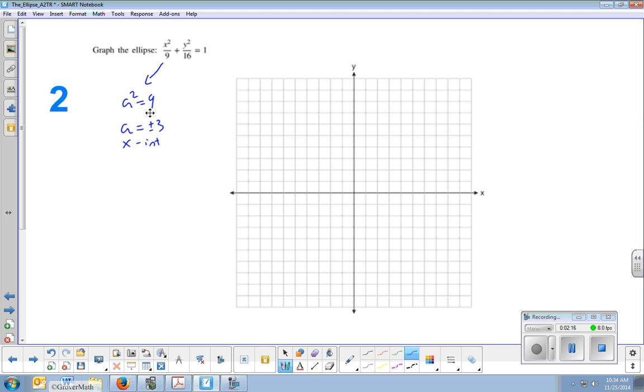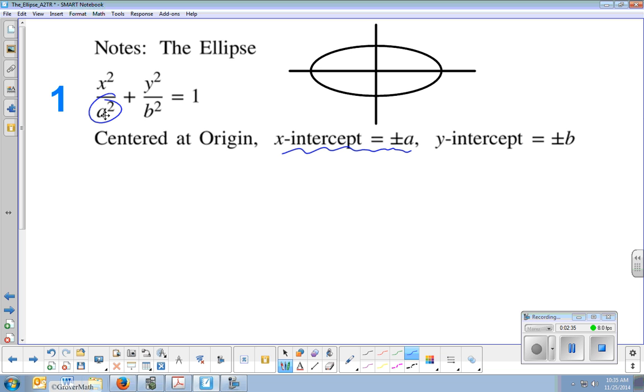So what I'm going to do is I'm going to right away, on my x-axis, I'm intercepting at plus or minus 3. Here's negative 3, here's positive 3. So you're going to hit your x-axis at the square root of the number below x squared. And that's what this is saying. So the number below is a squared, so a is that.